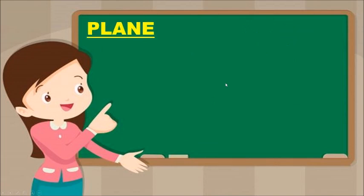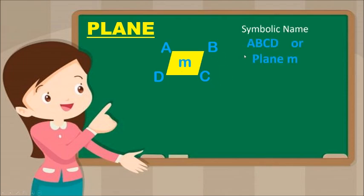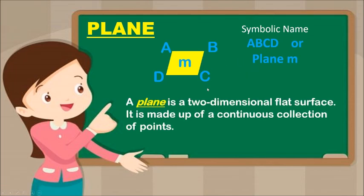Next is Plane. A plane is a flat surface. The symbolic name is Plane ABCD, or Plane M. A plane is a two-dimensional flat surface. It is made up of a continuous collection of points.